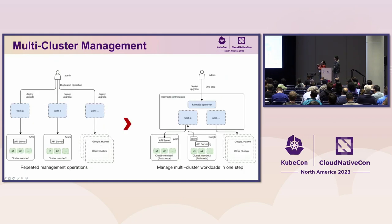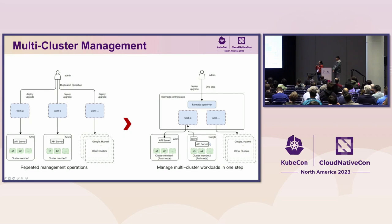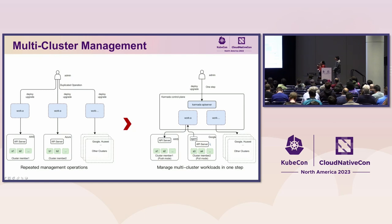This is more like a before and after. Before using Karmada, an end user manually deploys each deployment to each member cluster, resulting in a lot of engineer toil and duplicate operations. But after using Karmada, it offers a unified, centralized control plane so all workloads can be propagated to the right member clusters based on the propagation policy you set. It's more like a one-step operation instead of redundant operations.